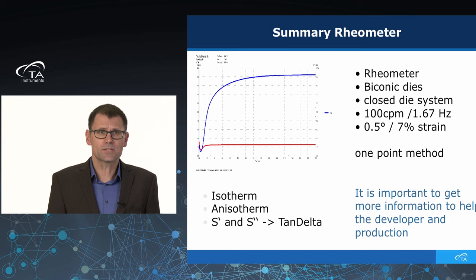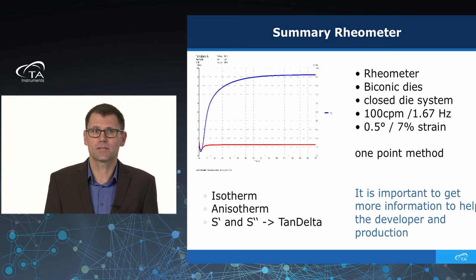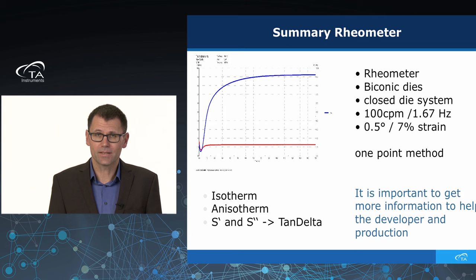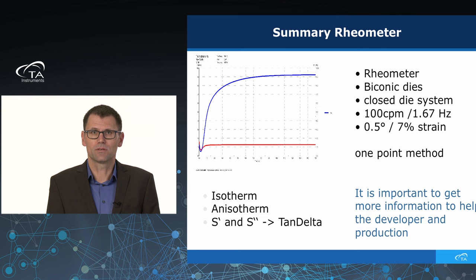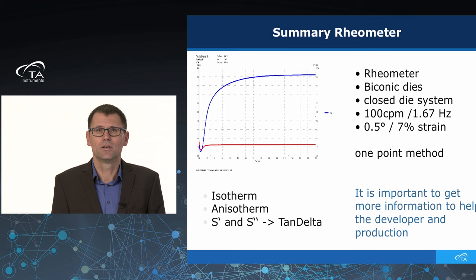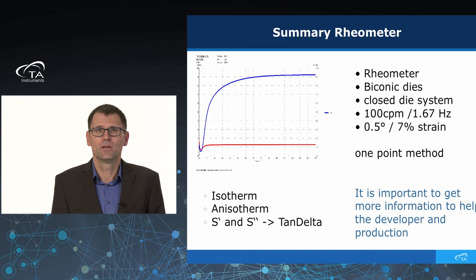A short summary for the MDR rheometer: what is typical on the market — a bi-conic die, a closed die system, fixed frequency at 100 CPM (1.67 Hz), at 0.5 degree of strain, about 7% strain. Again, like the Mooney, we are measuring only at one shear rate. During production we encounter the whole range of shear rates, but we characterize our material with only a one-point method. That is why we really need more information for developers and production teams to determine whether materials are suitable for production.